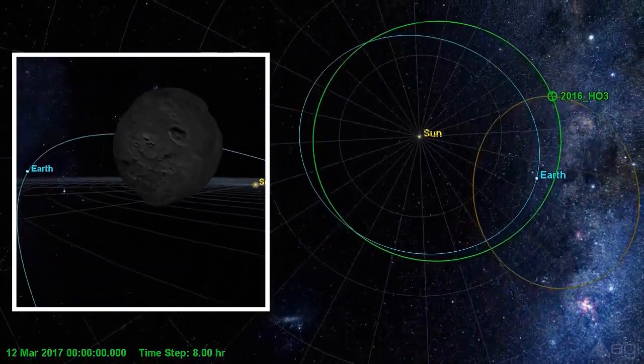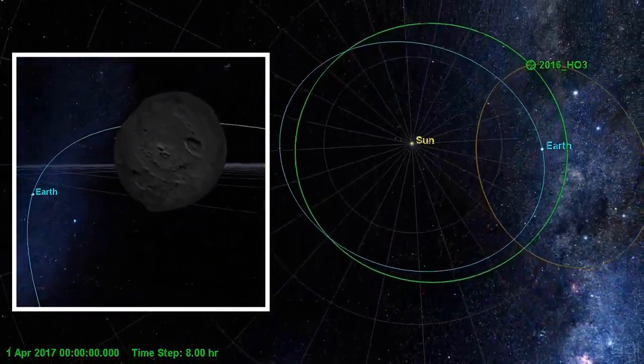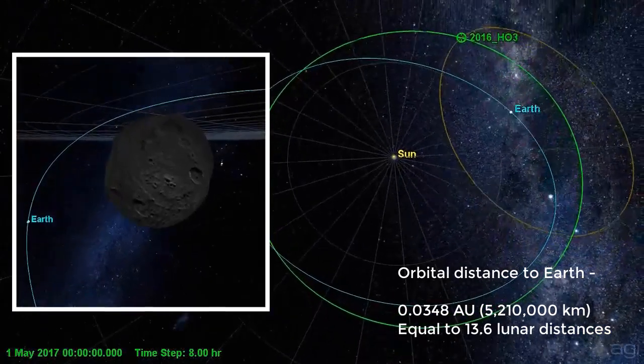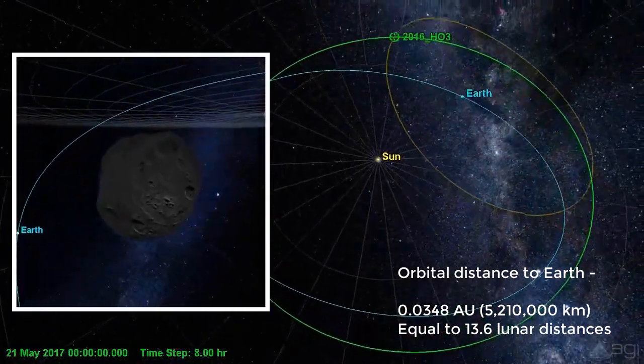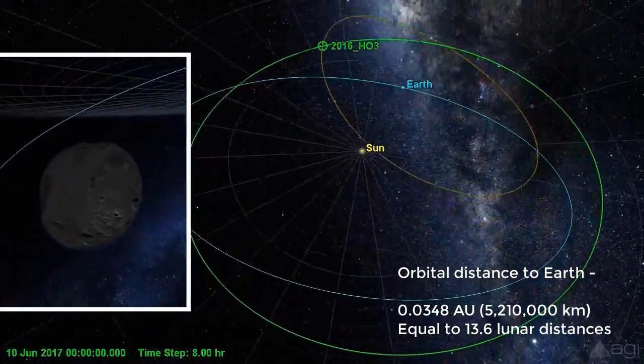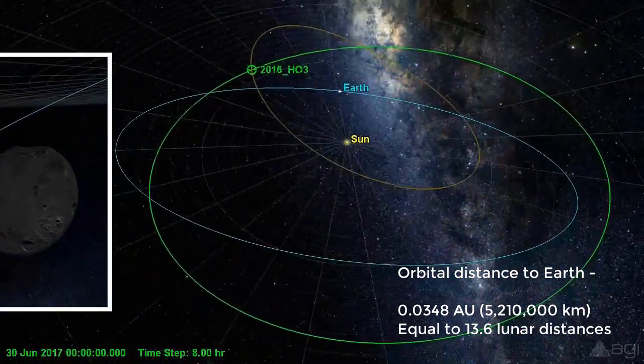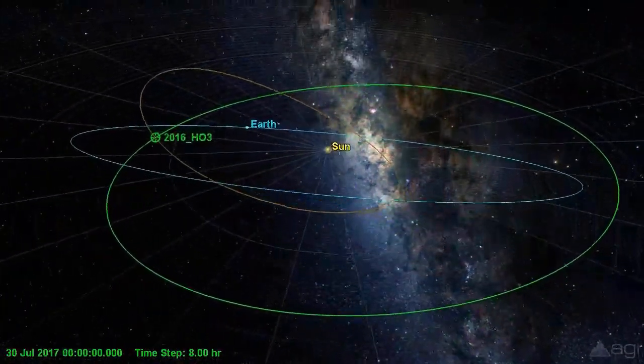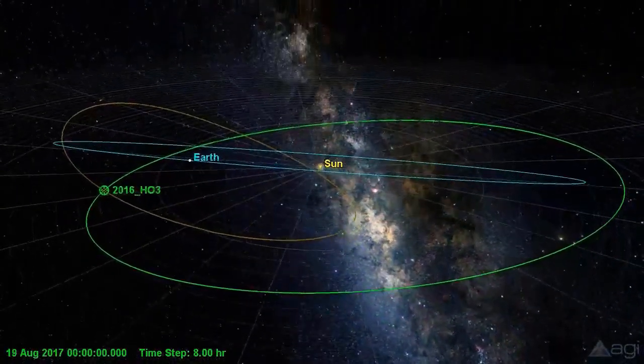It has an Earth minimum orbital intersection distance of 0.0348 astronomical units, equal to 5.21 million kilometers or 13.6 lunar distances. Although too distant to be considered a true natural satellite of Earth, it is the best and most stable example to date of a near-Earth companion or quasi-satellite.